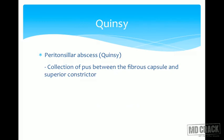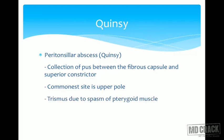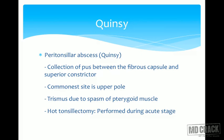Quinsy, also known as peritonsillar abscess, is the collection of pus between the fibrous capsule and the superior constrictor muscle. The commonest site is the upper pole of the tonsil, and there is trismus due to spasm of the pterygoid muscle. Hot tonsillectomy is when tonsillectomy is performed in the acute stage. Interval tonsillectomy is performed after six weeks, once the acute attack subsides.